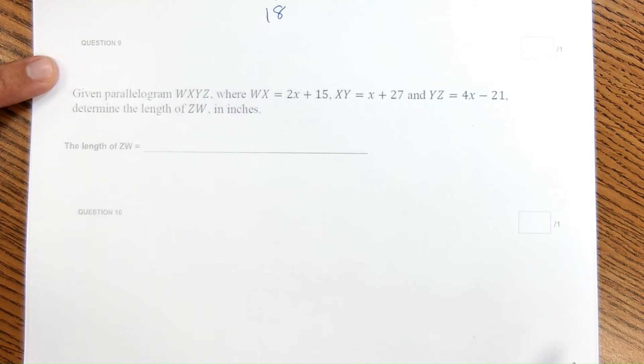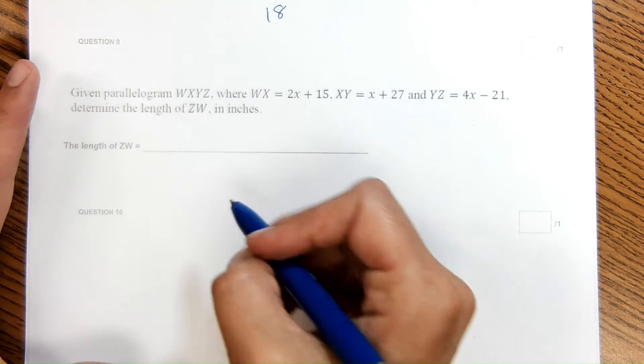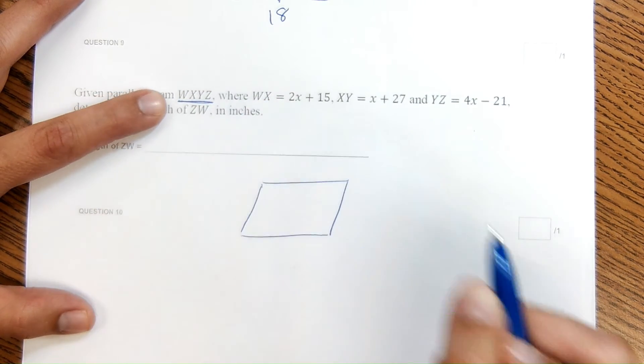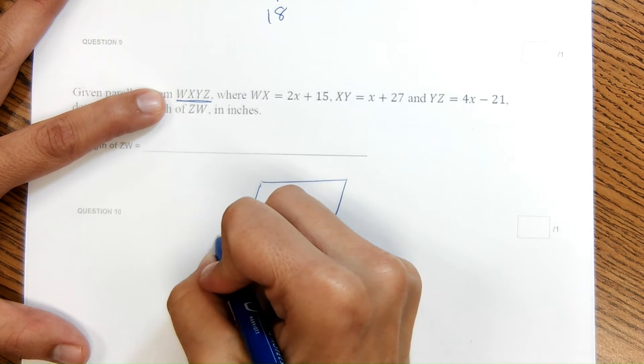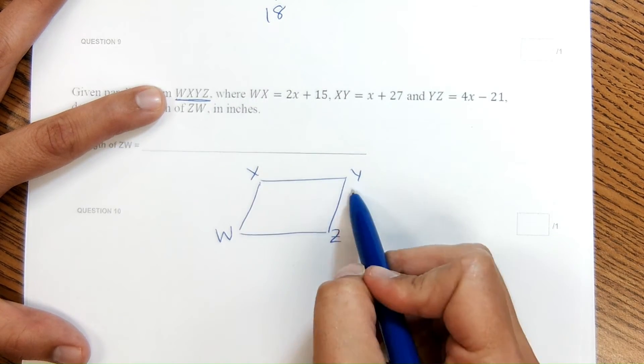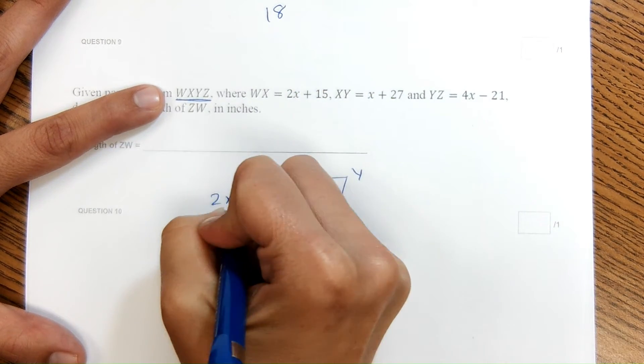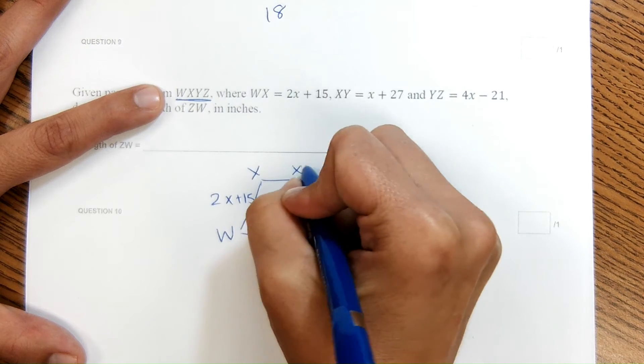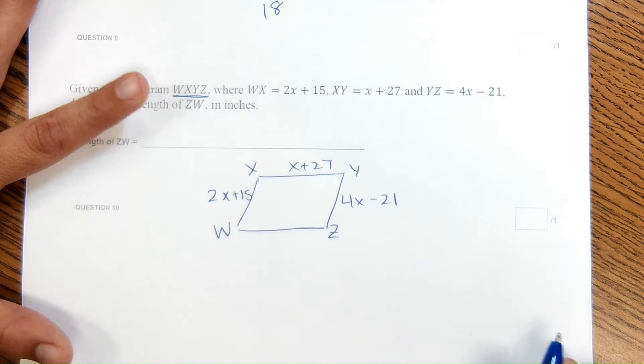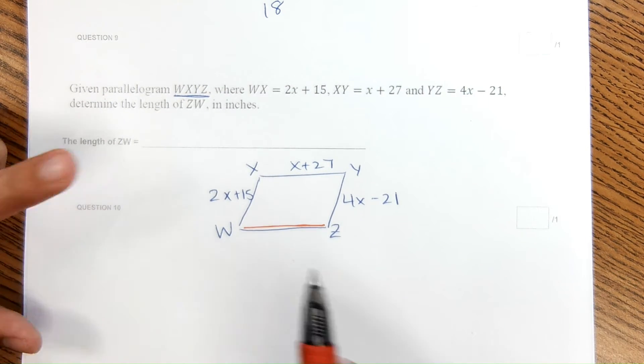This one right here, given parallelogram WXYZ, and it gives us some expressions. The only way to do this is to draw it out. So I'm going to draw a parallelogram. And then when I label it, I need to make sure I label these coordinates in order so that way everything falls into place. So WXYZ. As long as I put those in order, it could go clockwise or counterclockwise. As long as they're in order, it will work out. So WX is 2X plus 15, XY is X plus 27, and YZ is 4X minus 21. At this point, it asks for the length of ZW.